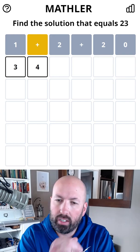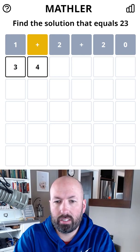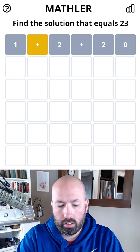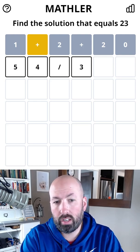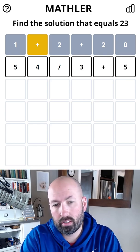So we're going to have to either do a subtraction or maybe a division. I think we need to get something into the teens and then add back up to 23, and so maybe something like 54 divided by 3, which would be 18, and then we could add 5. Let's try that and see.